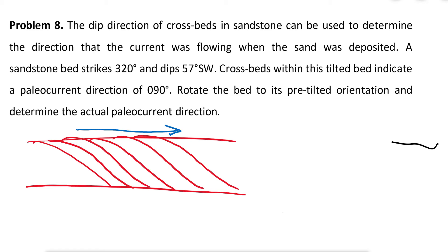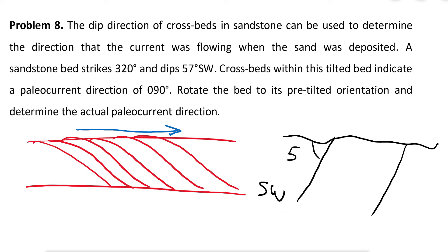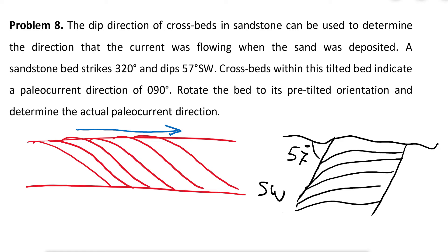Let's say this is the Earth's surface, and we have the unit dipping towards the southwest. There are some cross-bedding structures in this unit, and the question is asking us to obtain the actual paleocurrent direction.